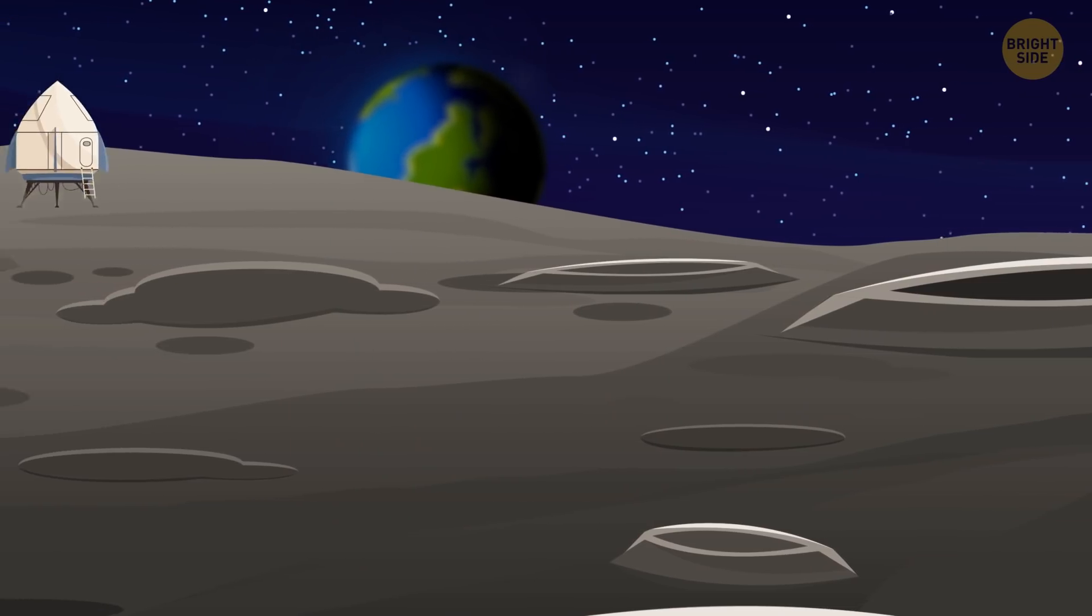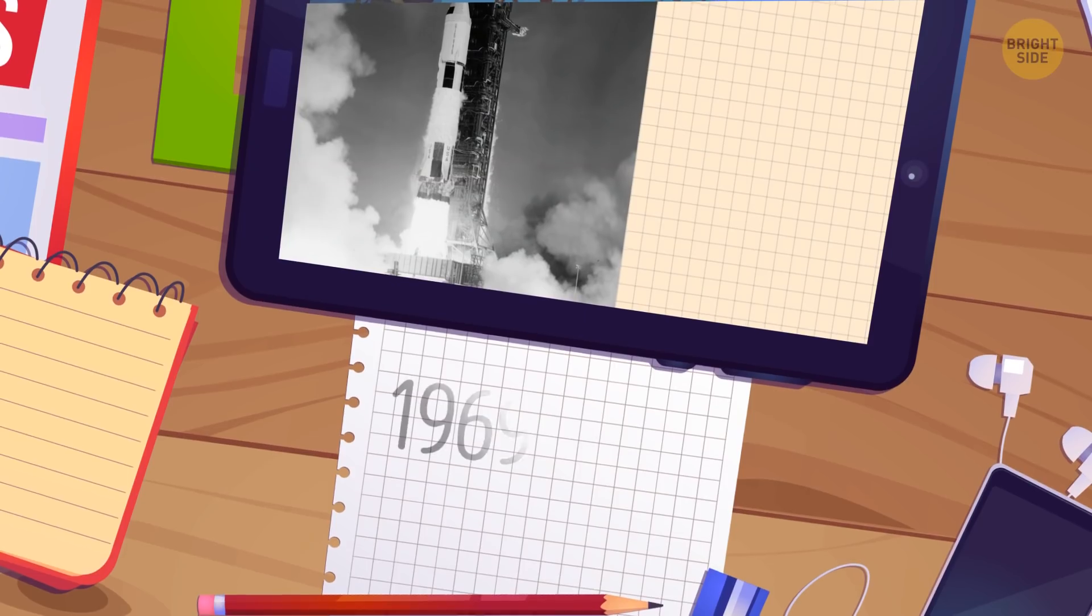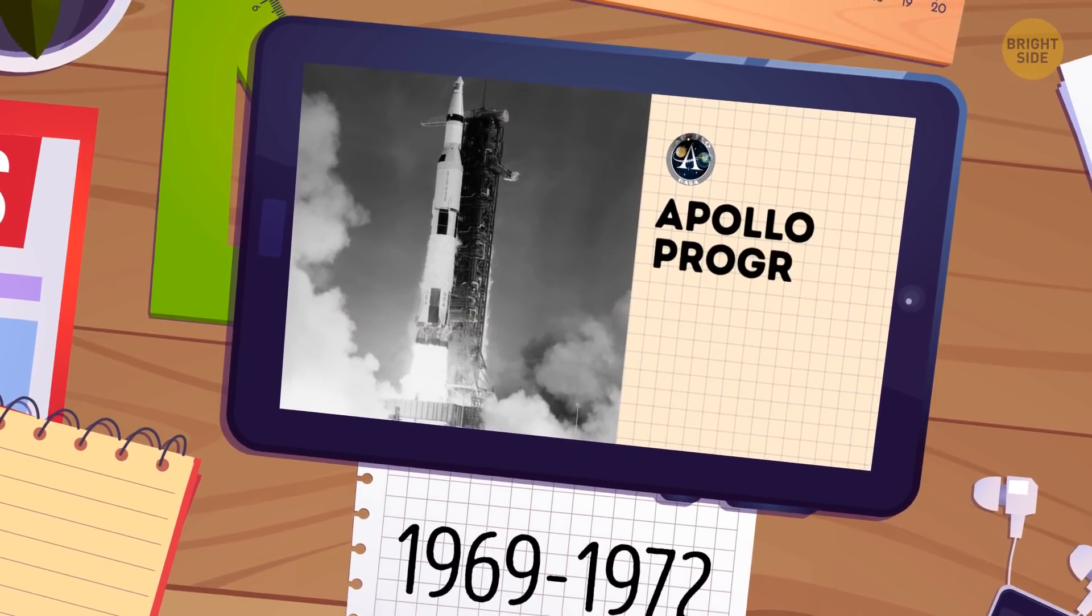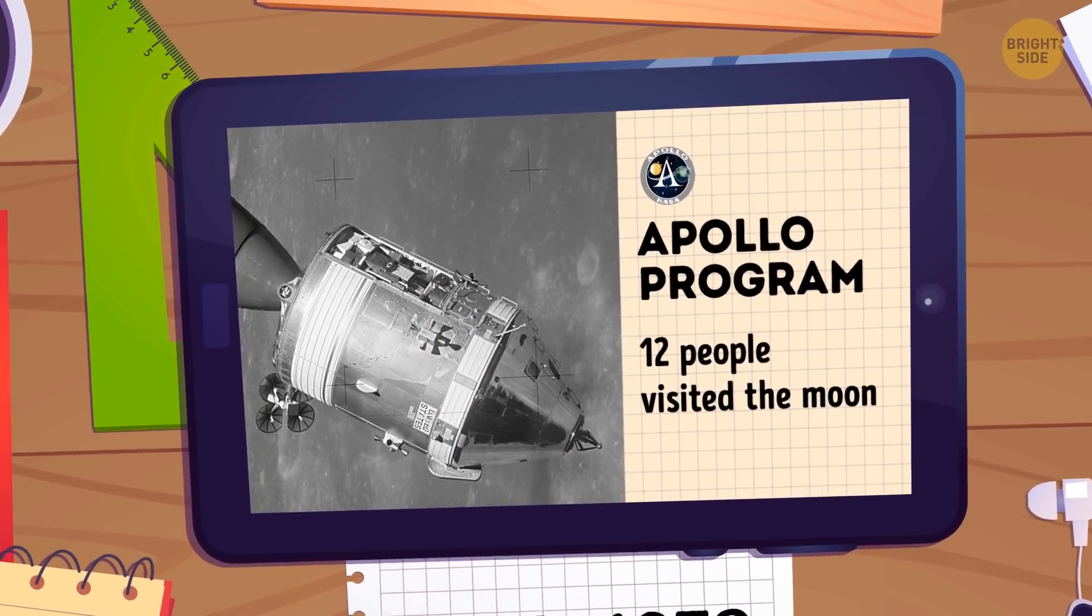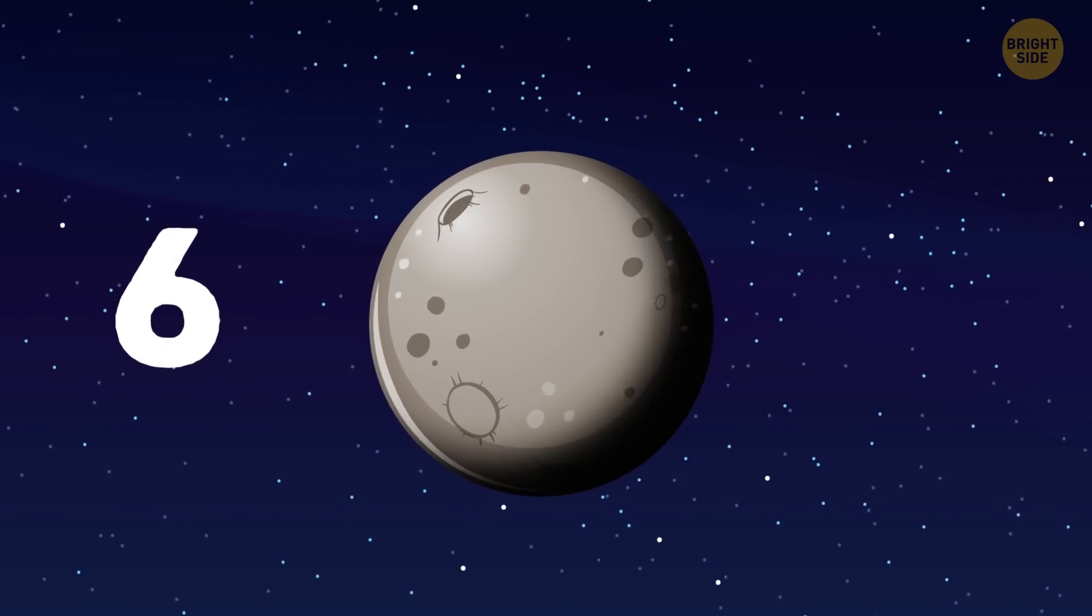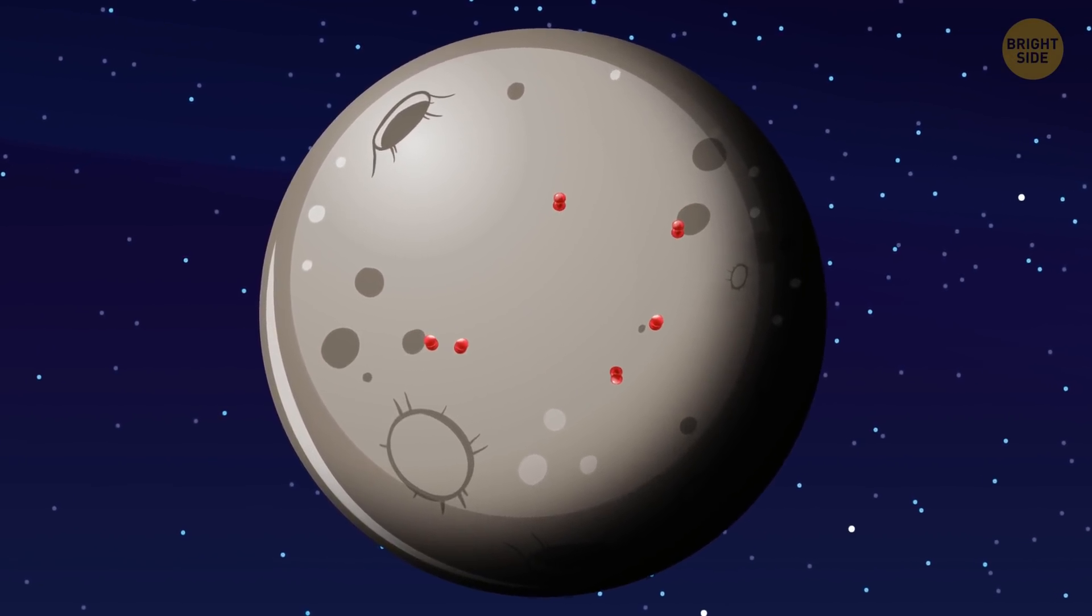Other strange objects that can be seen on the Moon were left there by humans. Between 1969 and 1972, 12 people visited there as part of the Apollo program. In all, there were six landing sites where the astronauts left a bunch of stuff behind.